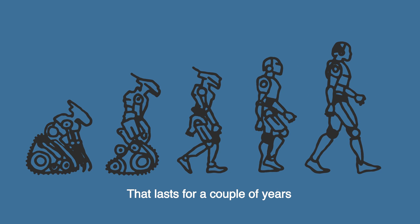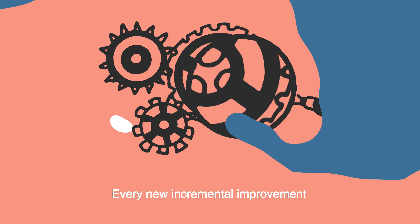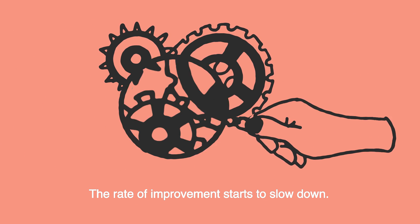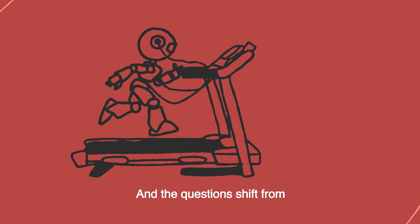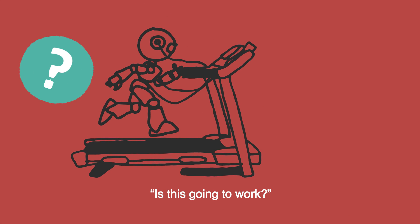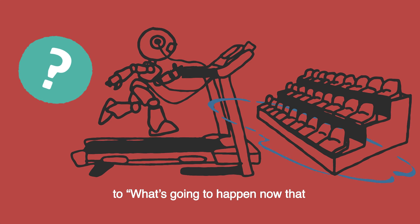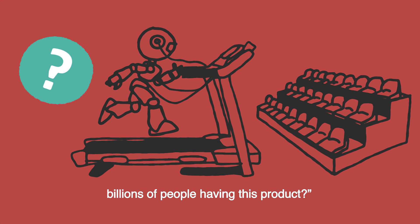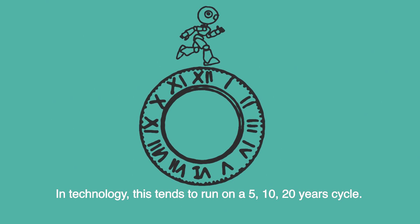That frenzy lasts for a couple of years and then things start to slow down again. Every new incremental improvement is harder for the user to perceive. The rate of improvement starts to slow down and the questions shift from 'is this going to work?' to 'what's going to happen now that we've got tens of millions, hundreds of millions, billions of people using this product?' In technology this tends to run on a 5, 10, or 20 year cycle.